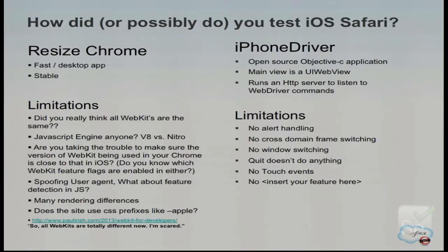iPhone driver is the now-deprecated application that the Selenium project has in Objective-C. It uses a UI web view to interact with a native browser on an iOS device. It currently has a laundry list of limitations because there's no API available in the public realm for handling alerts, cross-domain switching, or window switching. Quit right now doesn't do anything. And there's no such thing as touch or native events using iPhone driver — generating a tap, double tap, or swipes, those don't exist.